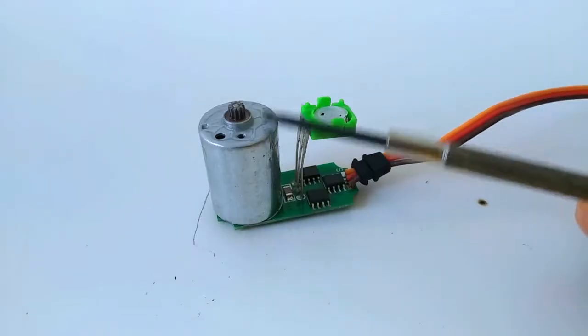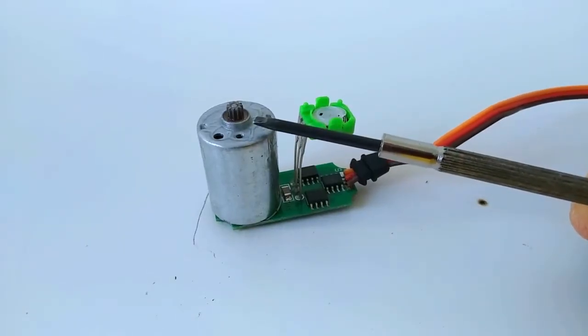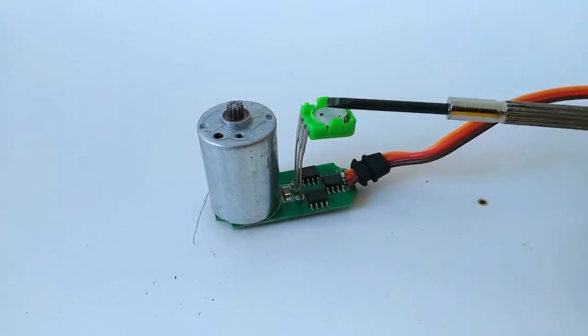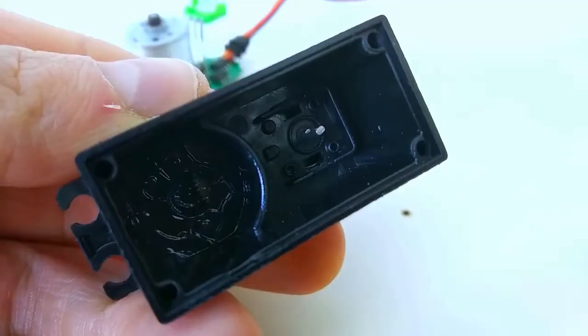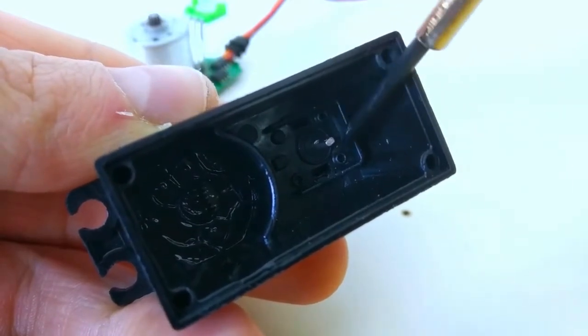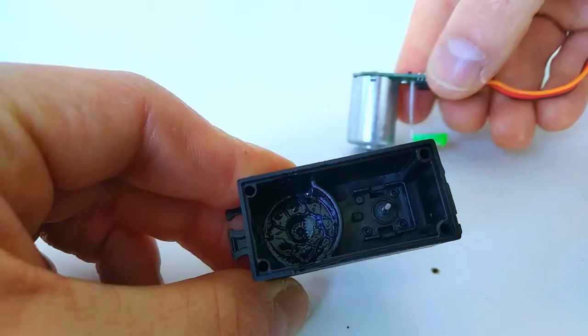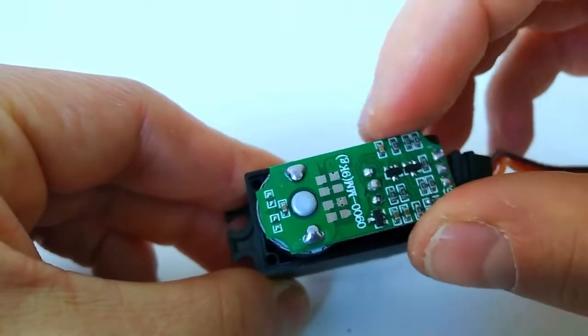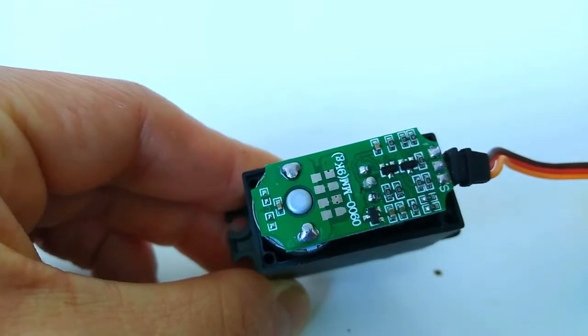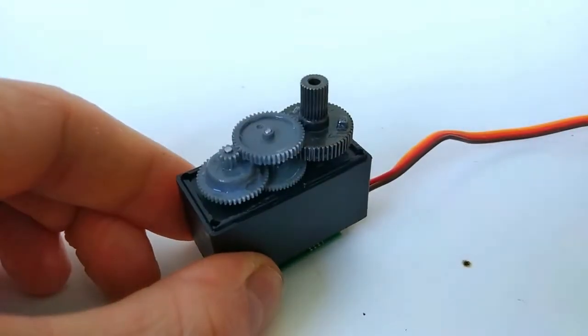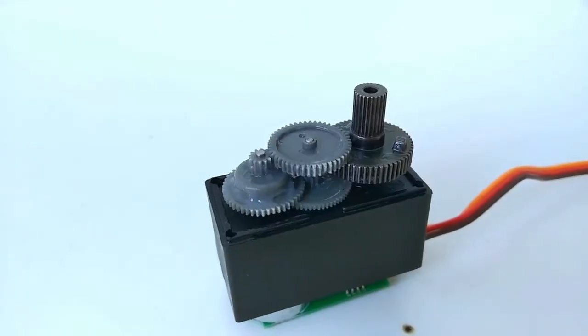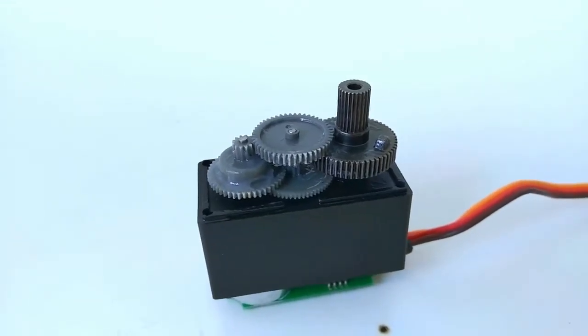And next to it is a potentiometer, or variable resistor, to measure the position of the output shaft of the servo. The circuit board fits in like this, so the potentiometer slides over the output shaft. At the top of the servo, we have a gearbox with a set of gears to increase torque and reduce speed of the output shaft to make it powerful and precise for various applications.